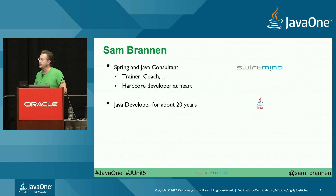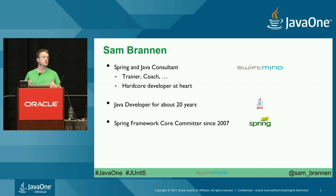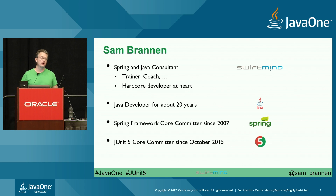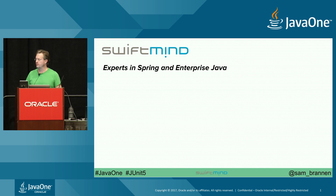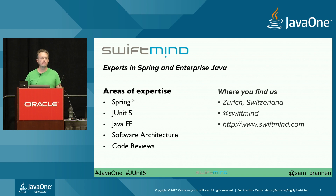I've been a Java developer for about 20 years, a core Spring framework committer since 2007, when I originally rewrote Spring's testing support — the whole annotation-based support for testing, JUnit 4, etc. And I've been a core committer for JUnit 5 since October 2015. SwiftMine — experts in Spring and Java — you can find us online if you want some consulting on how to use JUnit 5 or Spring better.